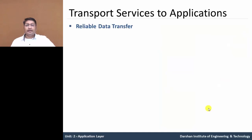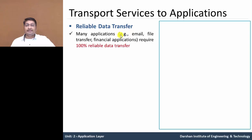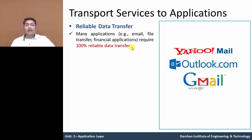The first parameter is reliable data transfer. Some applications like email, file transfer, and financial applications such as banking transactions require 100% reliable data transfer. For example, if I am using mail services like Yahoo Mail, Outlook, or Gmail, we must receive a complete and correct mail — data should not be lost.